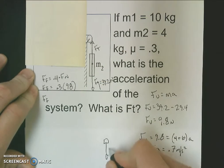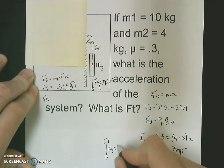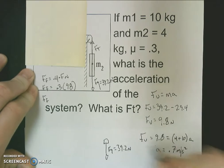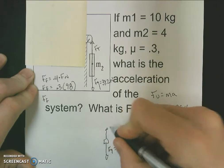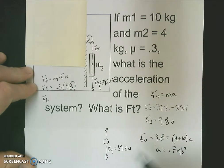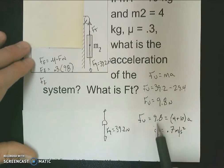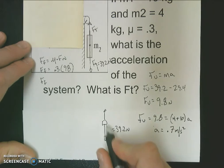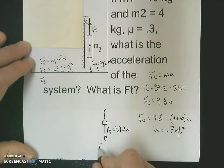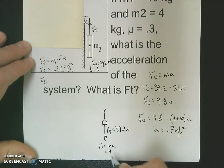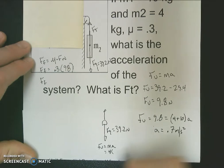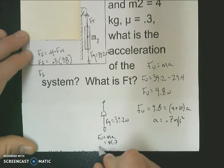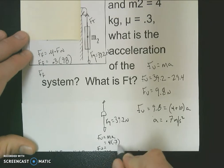I know the force of gravity on the hanging mass is 39.2 newtons, and I know there's a force of tension upward that's not as big as the force of gravity down. I also know that I have an acceleration of 0.7 meters per second squared. So for just this mass, I can find the unbalanced force using F = ma: 4 kilograms times 0.7, so my unbalanced force here is 2.8 newtons.